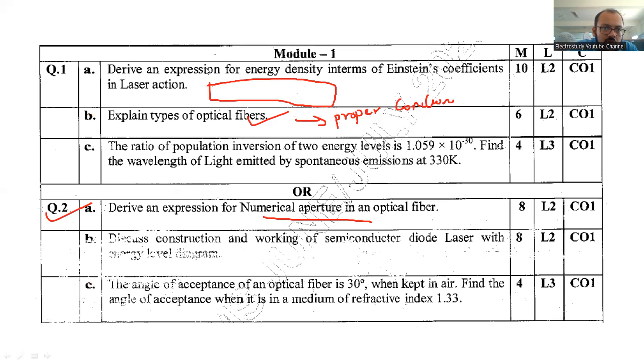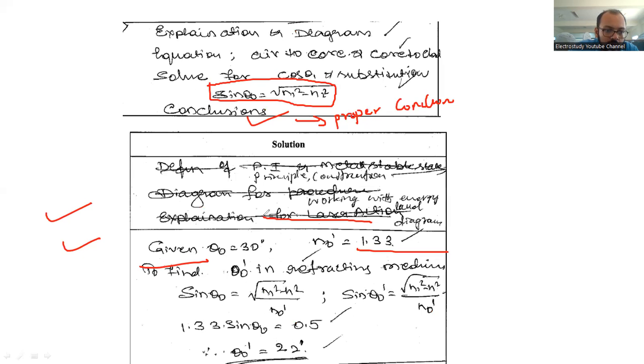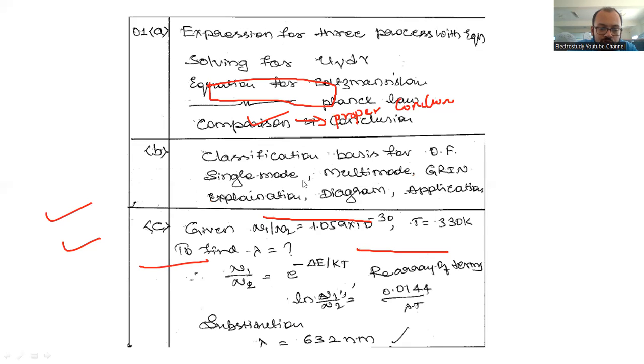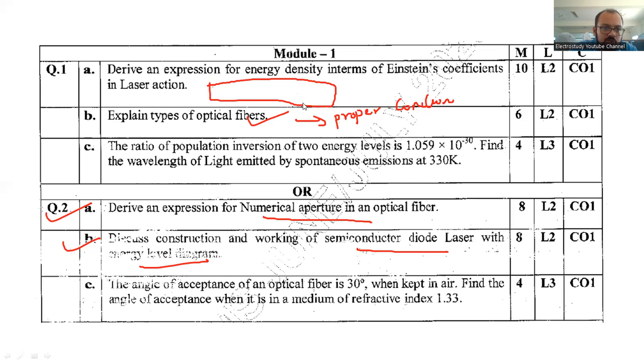Question number 2B: discuss the construction and working of semiconductor laser with the energy level diagram. So principle and construction working with the energy level. That diagram you are supposed to explain. Principle - how does it work? Construction means what are the components? Those things you are supposed to write.